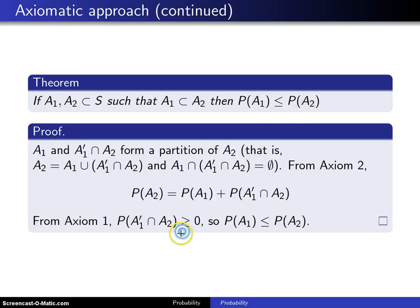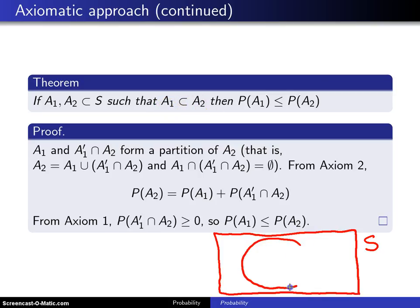This proof is going to rely on the axioms, just as before, and this time a Venn diagram will also prove to be helpful. So here is the sample space S, and since we know that A1 is a subset of A2, that means A2 is the larger event, so I'm going to draw a big event A2, and then within that a smaller event A1.